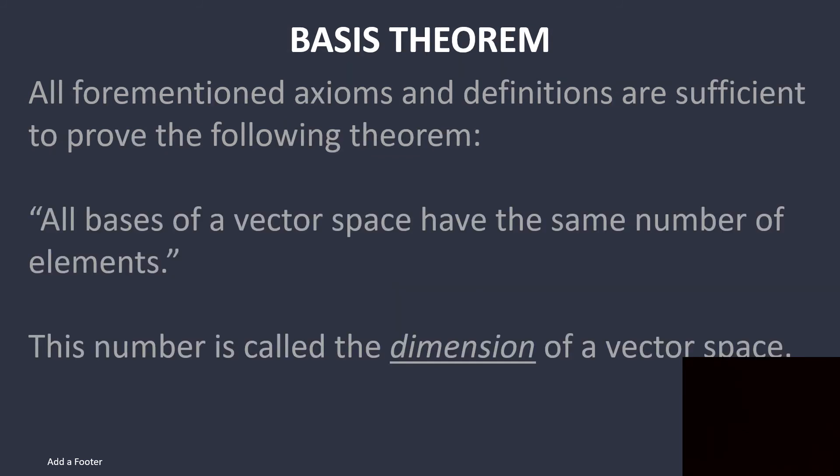And then all of the aforementioned axioms and definitions I've given are sufficient to prove the basis theorem, which states that all bases of a vector space have the same number of elements, which basically means that any basis will have the same amount of unit vectors or vectors in it. And so this is all called dimension.